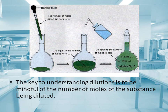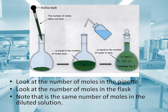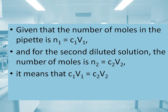The key to understanding dilutions is to be mindful of the number of moles of the substance being diluted. Note that the same number of moles is in the diluted solution as in the pipette. Given that the number of moles in the pipette is n1, which equals C1 times V1, and for the diluted solution n2 equals C2 times V2, it means that C1V1 is equal to C2V2.